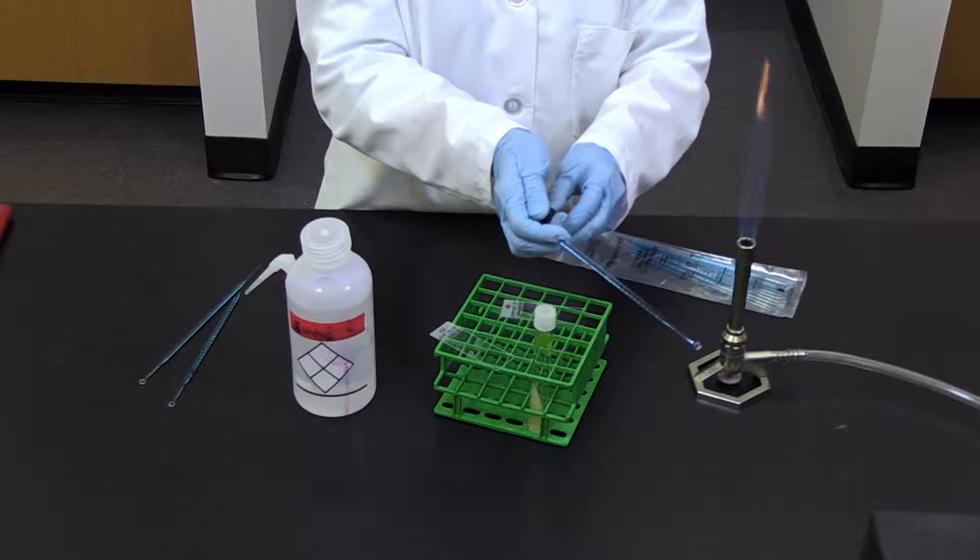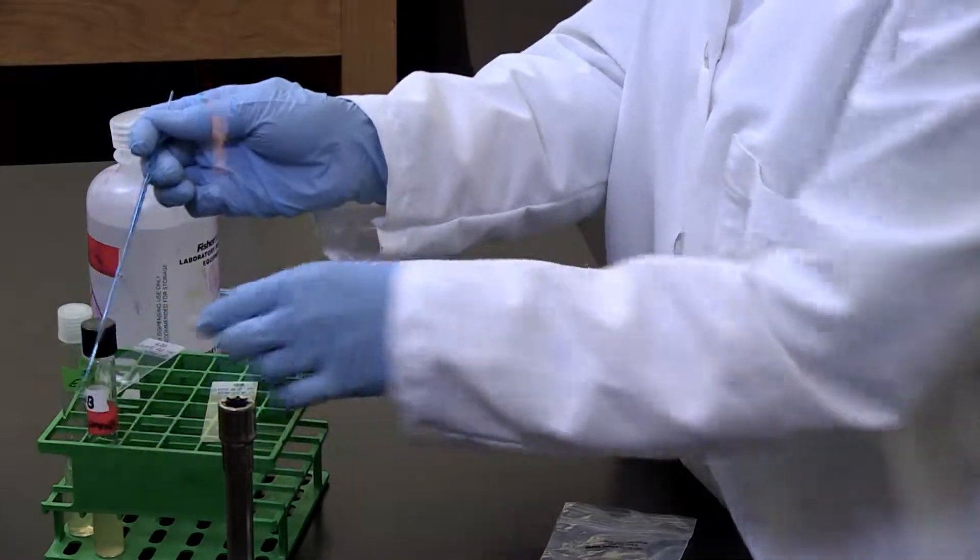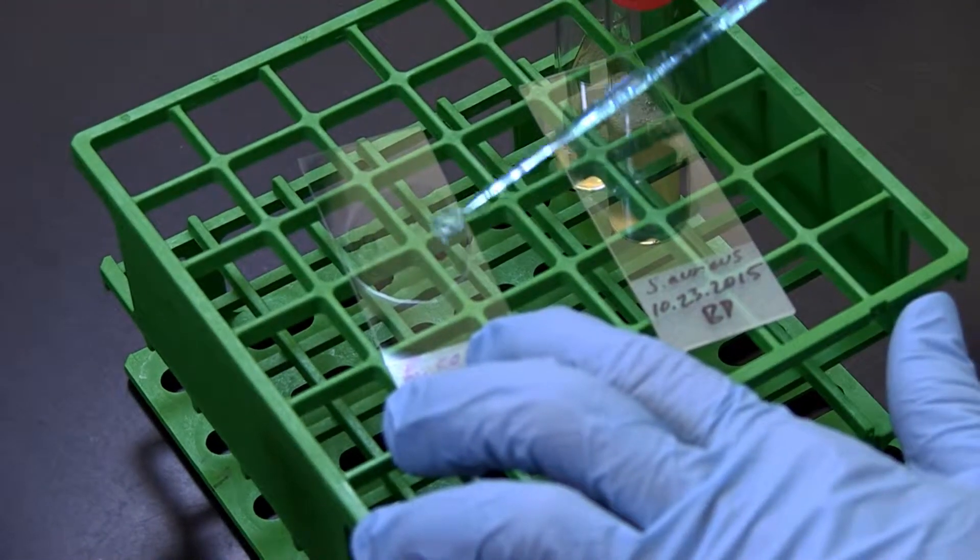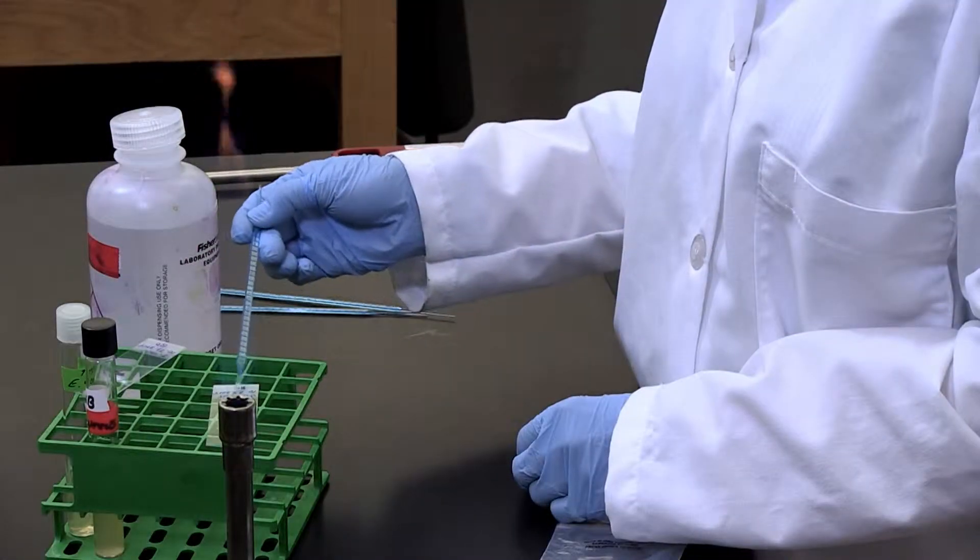Next, aseptically add two loop fulls of the culture to the center of the slide and use the loops to spread it over the slide. Cover an area about the size of a quarter.